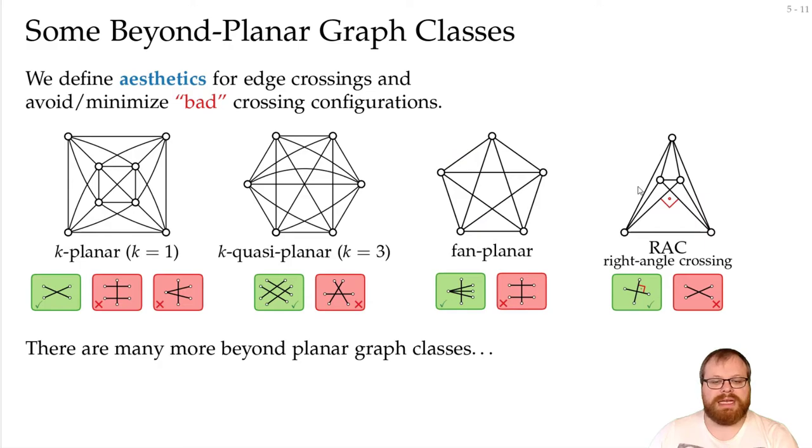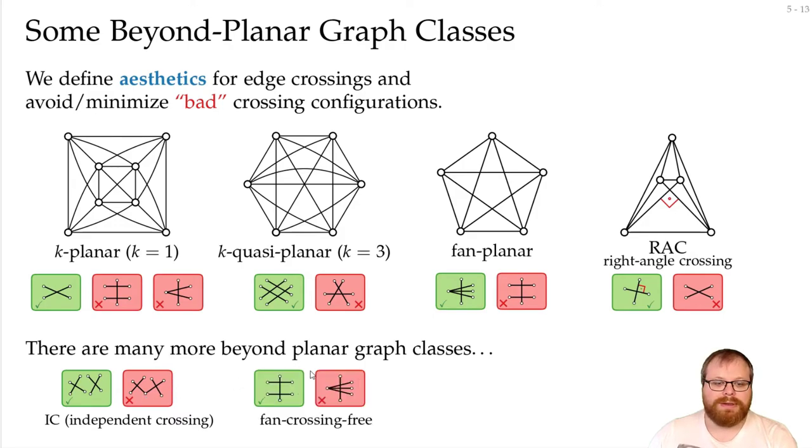There are many more graph classes that we can define. For example, IC-planar graphs, where IC stands for independent crossing. Here all the vertices can be involved in at most one edge that is crossed. So this is forbidden, because this vertex has two crossed edges. There are fan-crossing-free graphs. That's basically the opposite of fan-planar. Here we cannot have fans that cross, so all the edges that cross another one have to be independent.